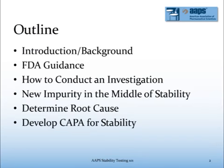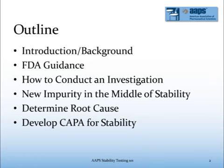In this session, I'll address the following. I'll provide an introduction and some background information related to out-of-spec investigations and discuss how the FDA guidance came to be. I'll review how to conduct an out-of-spec investigation and the steps to take when a new impurity is discovered in the middle of a stability study. I'll provide some tips on how to determine root cause. And finally, I'll discuss when to consider opening a CAPA for stability.